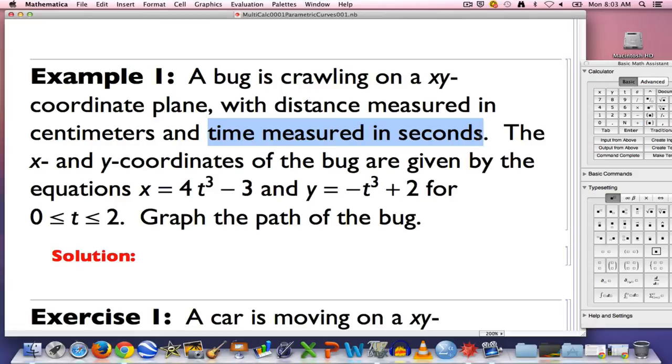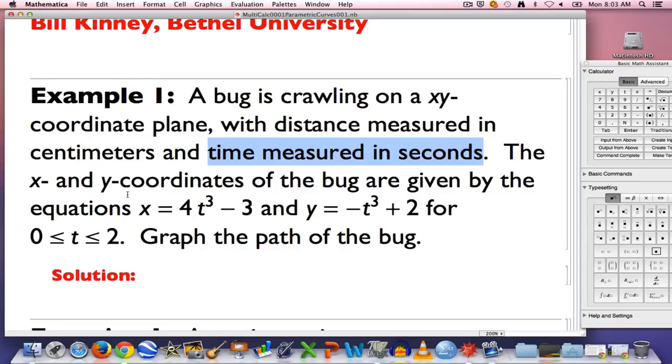The bug is moving in this plane. The x and y coordinates of the bug are changing over time. They are functions of time, and that in fact is the first thing I want to get across here. These equations that you see here are two functions that define the motion of the bug. They give you the x and y coordinates of the bug as functions of time. These equations are called parametric equations, and t, time, is the parameter.